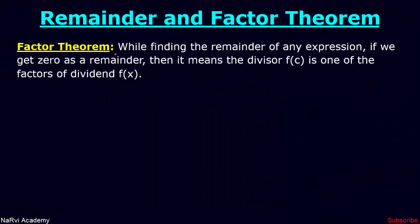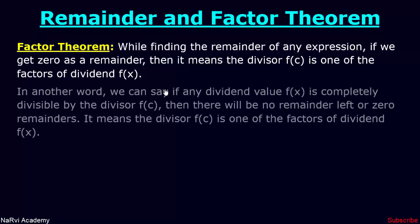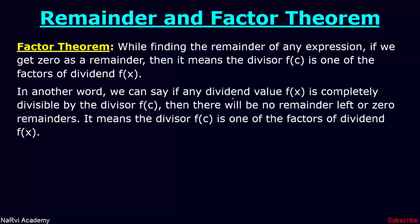Factor theorem is not a separate special theorem — it comes from the remainder theorem. While finding the remainder of any expression, if we get 0 as the remainder, it means the divisor f(c) is one of the factors of the dividend. In other words, if any dividend f(x) is completely divisible by the divisor f(c), then there will be no remainder, which means f(c) is one of the factors of f(x).